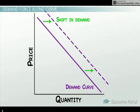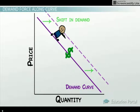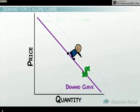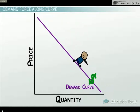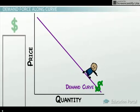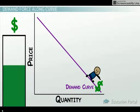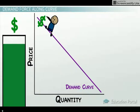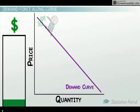Demand forces can cause us to move up and down the demand curve. Remember, we are talking about moving along an existing curve, not shifting the curve. This movement happens when the price of the product rises and falls. If the price were to rise, then we would be moving up the demand curve. If the price were to fall, we would be moving down the demand curve.